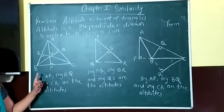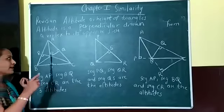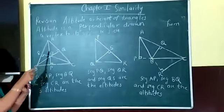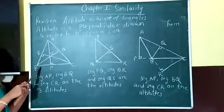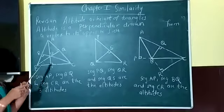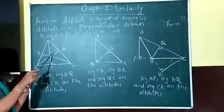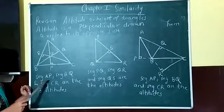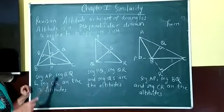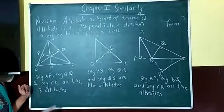The orthocentre in an acute angle triangle lies in the interior. The point of intersection of altitudes is called the orthocentre, denoted by O. So AP, BQ, and segment CR are the three altitudes in case of this acute angle triangle.